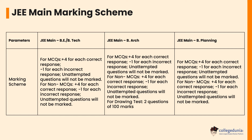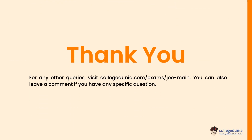Let's check the JEE Main marking scheme. The marking scheme is the same for all three papers: four marks are allocated for every correct answer, while one mark is deducted for each incorrect answer. However, with an exception on the drawing paper for JEE Main B.Architecture, where each question carries 50 marks. No marks are allotted to unanswered or unattempted questions. To know more details, visit our website and leave a comment if you have any specific questions. Thanks for watching — please like, share, and subscribe to the channel.